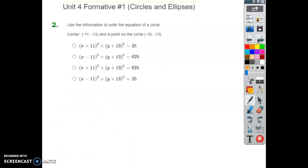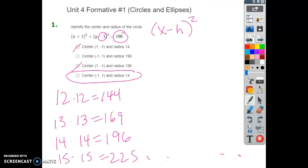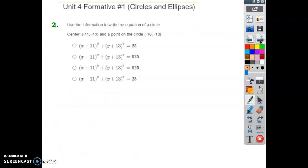Number two, use the information to write the equation of the circle. Now notice in the first one, we're given the equation, but we can immediately find the center and we can find the radius. They're giving us the center, but they're not giving us the radius. So we're going to actually have to find that using Pythagorean theorem.